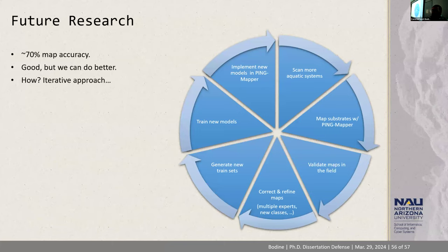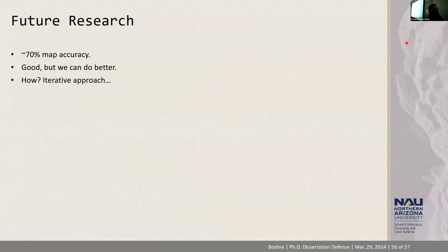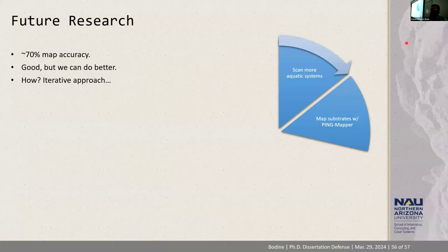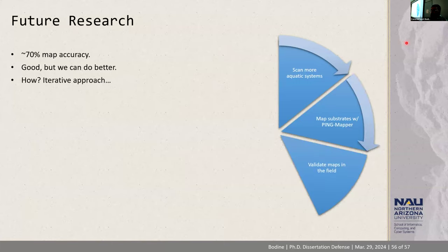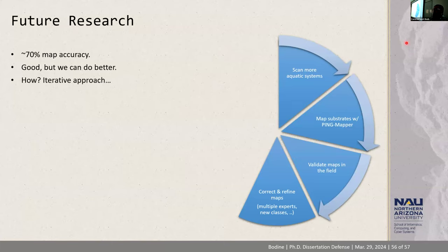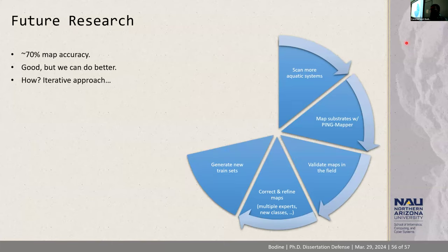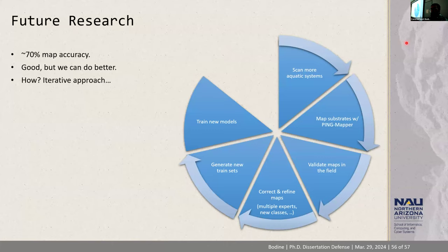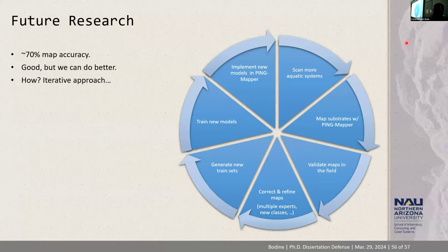As for future research, map accuracy is at 70% — I think that's good, but clearly we can do better. I propose an iterative approach: scan more aquatic systems, map substrates with PingMapper, validate those maps in the field, use that knowledge to correct and refine the maps, use those to generate new datasets, train new models, and implement them into subsequent versions of PingMapper — and that process continues until we're satisfied with the results.